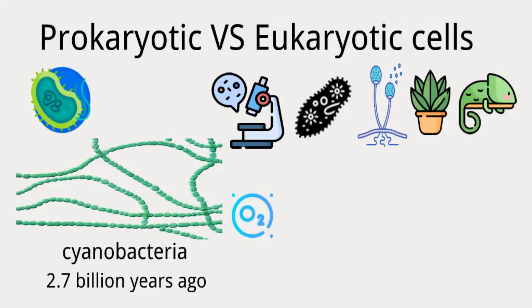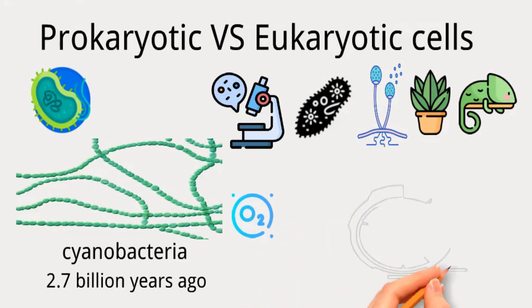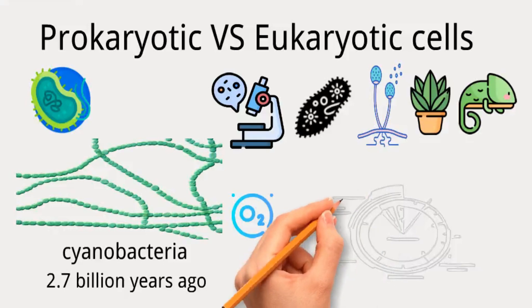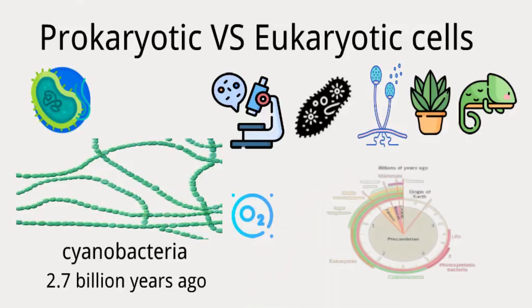The origin of eukaryotic cells is uncertain, with simpler forms possibly present over a billion years before complex multicellular animals emerged about 600 million years ago. Life on Earth developed relatively quickly after the planet formed and cooled, but the evolution of complex organisms like animals and plants took a much longer time.